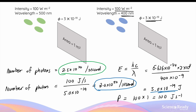So what's the implication of this? As we know, the energy transfer occurs between one photon and one electron. For the green light source, because we have more photons per second, we will also observe a greater photocurrent. Conversely, for the blue light source, because there are fewer photons per second, we will see a smaller photocurrent.